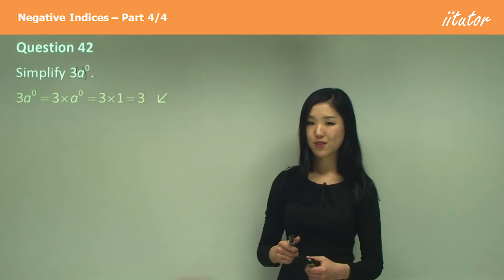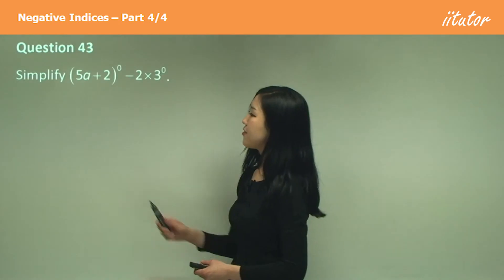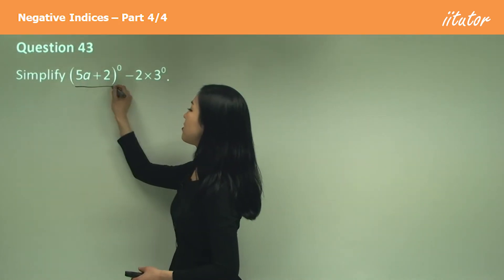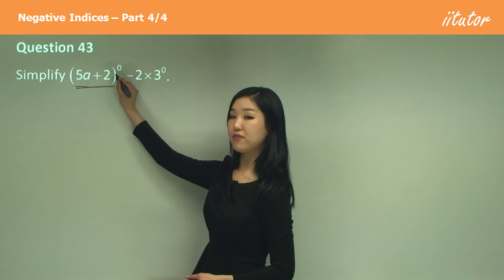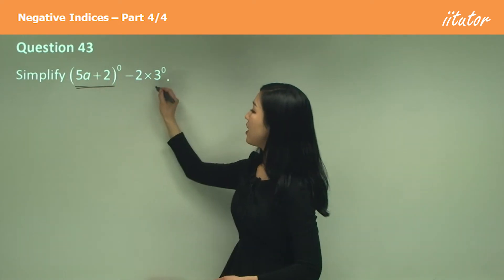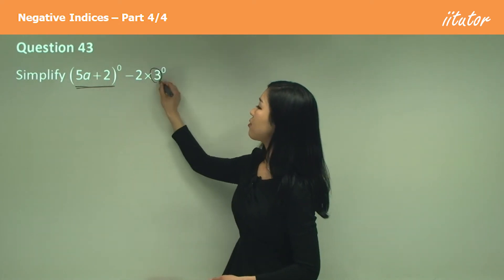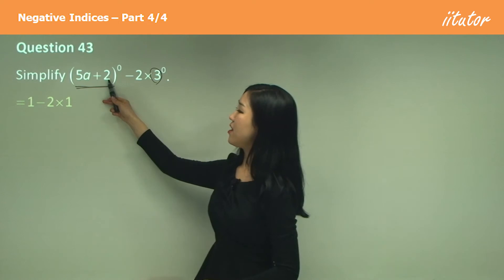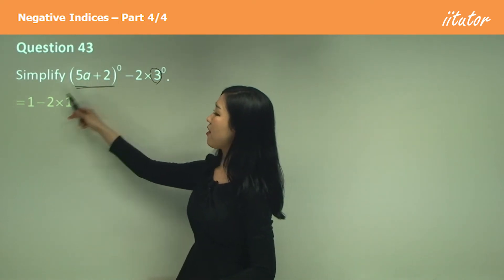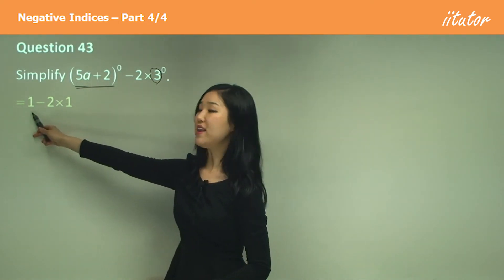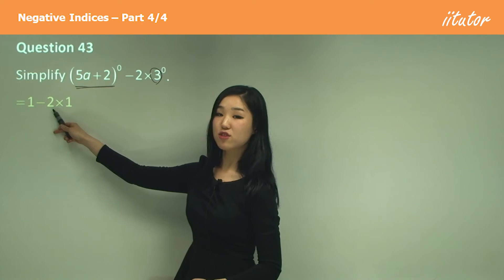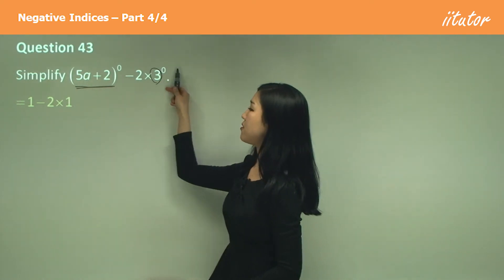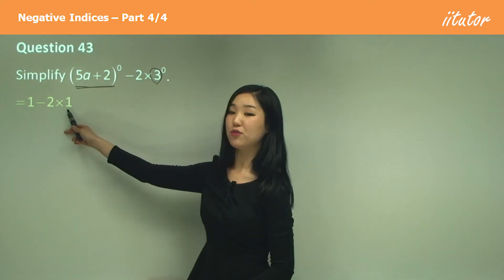See the difference with that previous question? So when we have brackets, the whole thing is to the power of zero. But here, only a is to the power of zero. So that one — the whole thing to the power of zero is one. Two stays as two, and then we have three to the power of zero, which is also one.